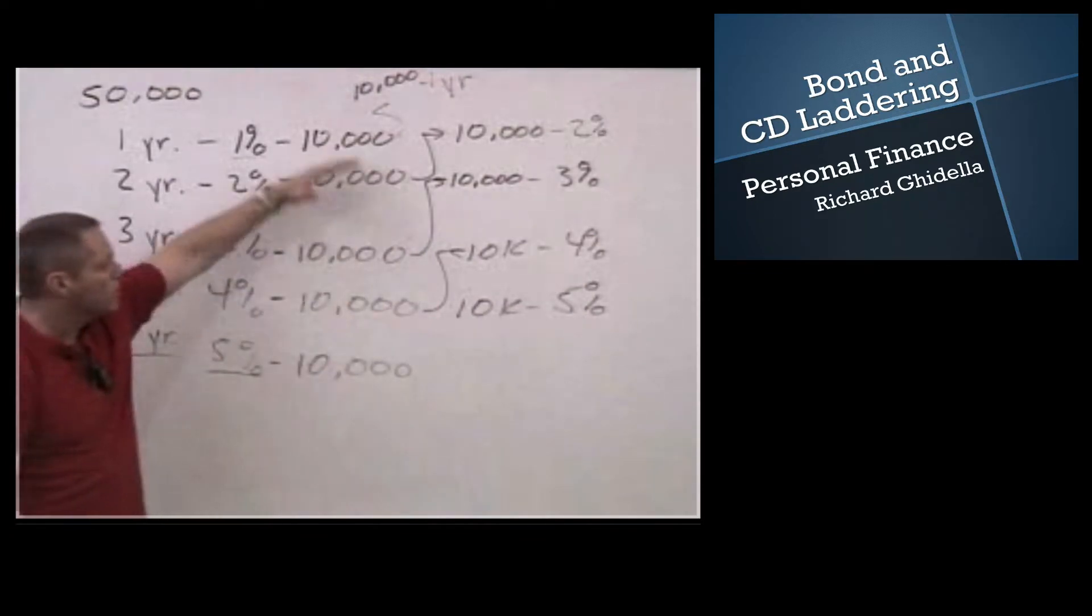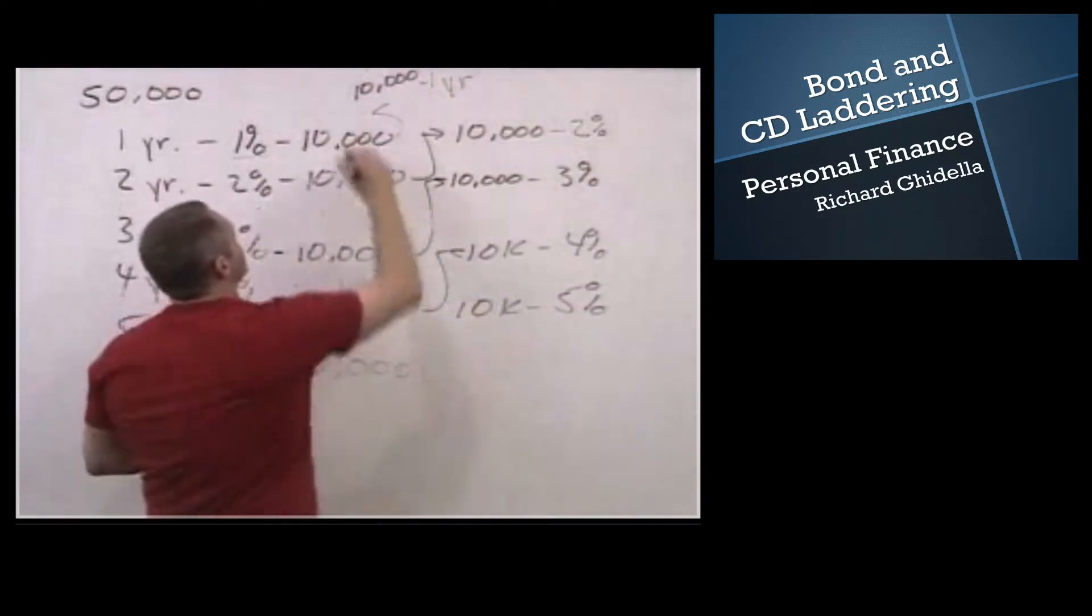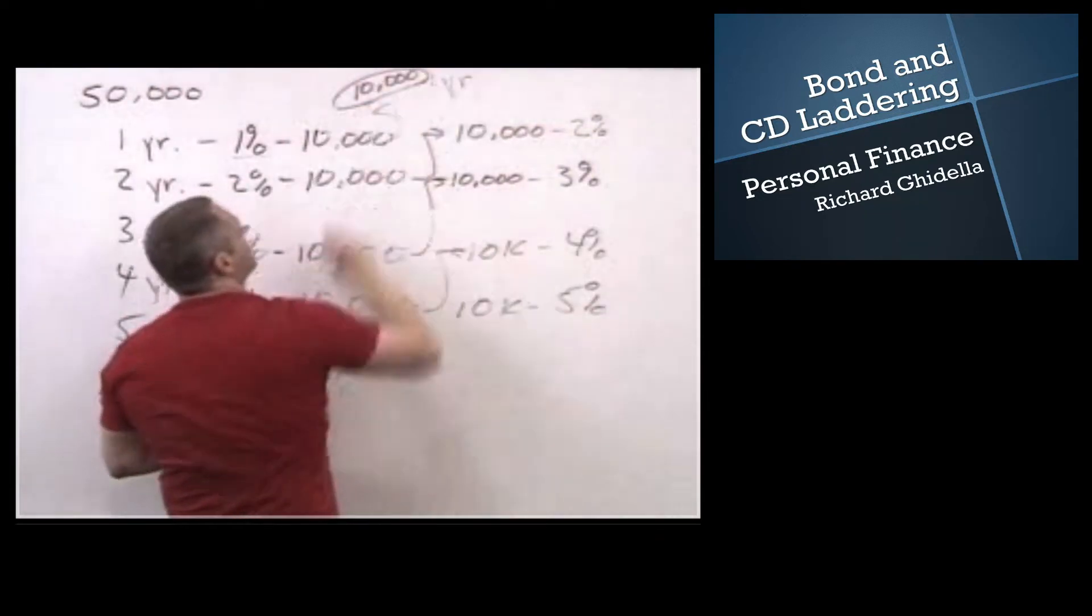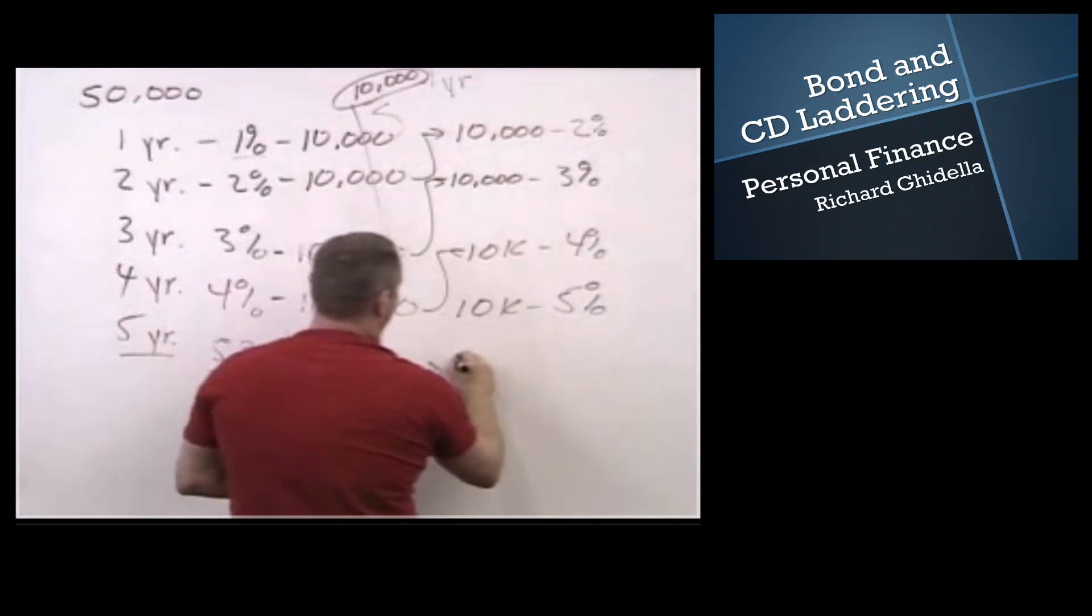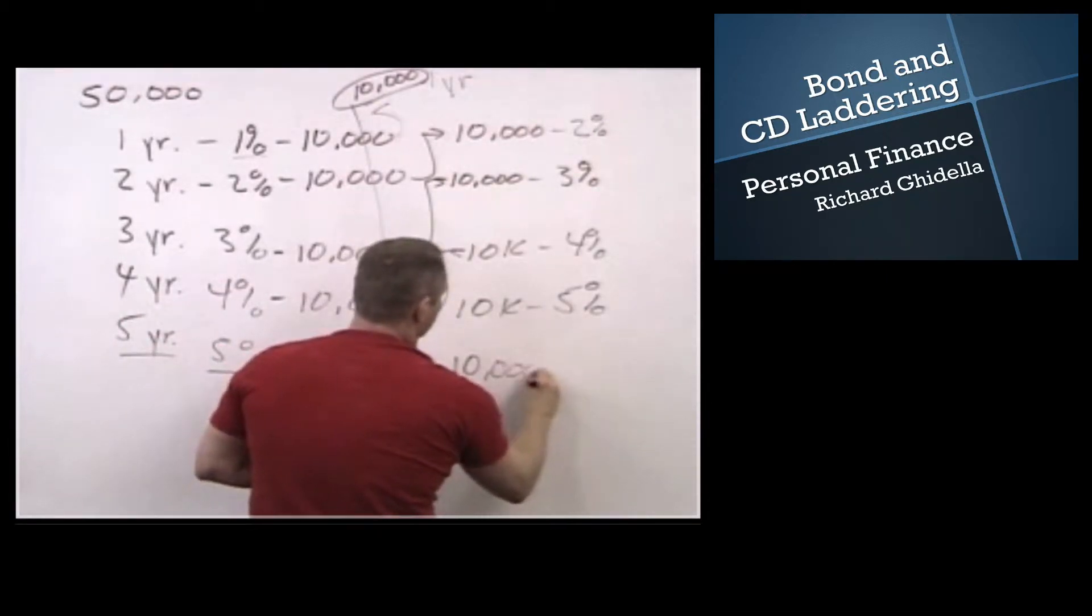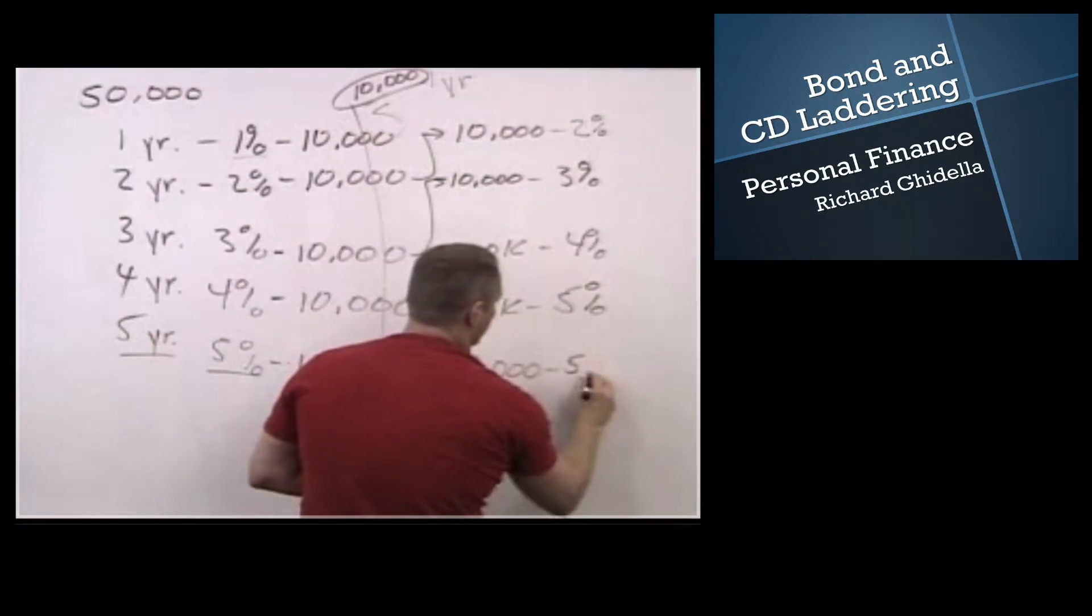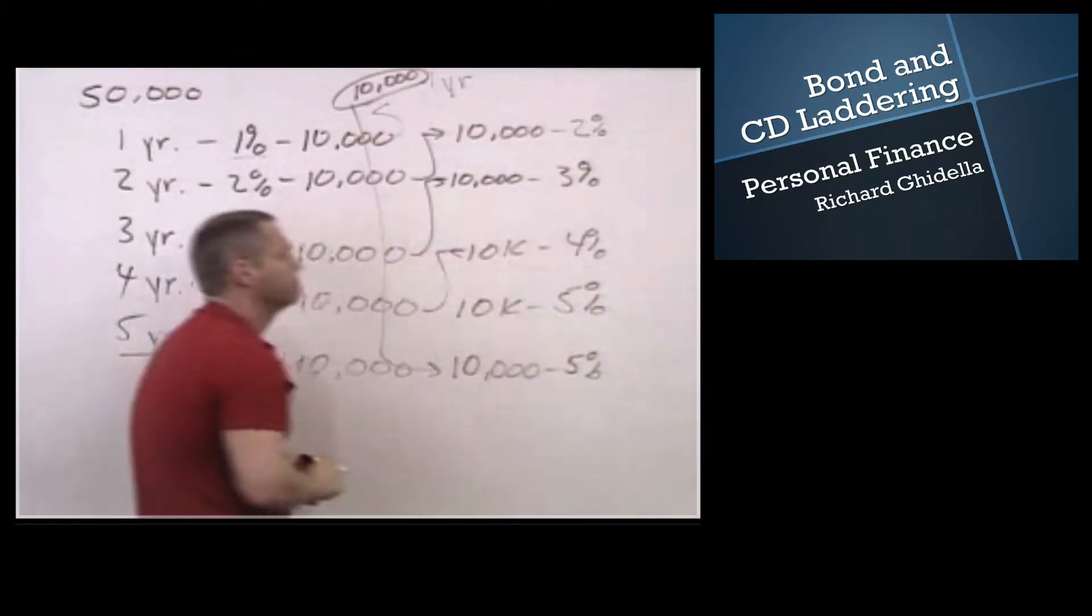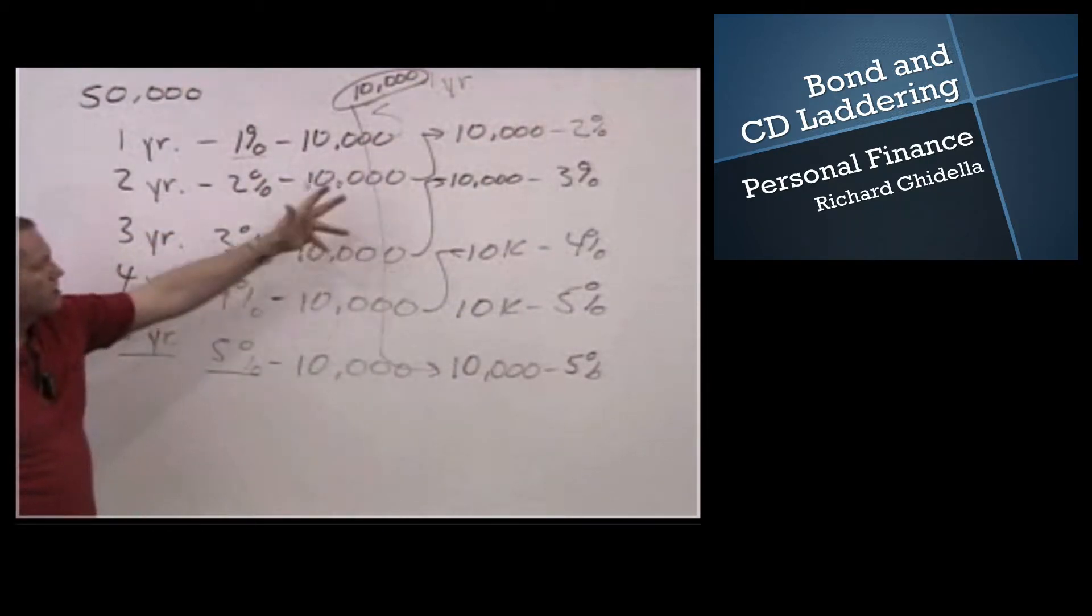Now what I'm going to do to keep my ladder intact is I'm going to take my $10,000 that I got back from my one year, and I am going to reinvest it, and I am going to buy another $10,000 five year CD, and I'll get a rate of return of 5%. So as you can see, my interest rates now start going up. I still got the same flexibility, however, my average interest rate here went up almost a full percent.